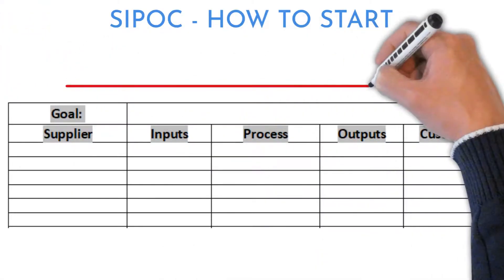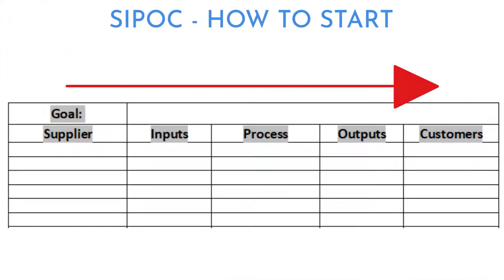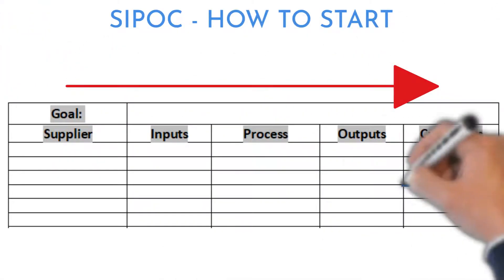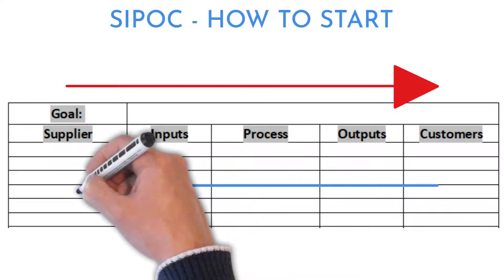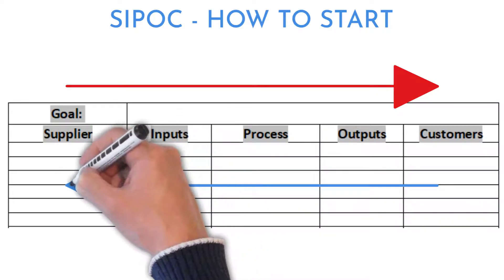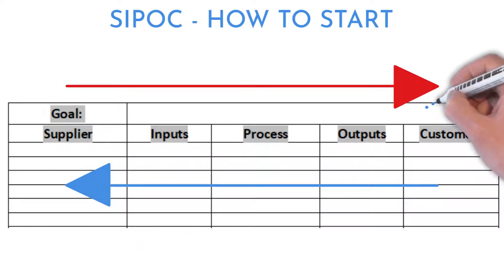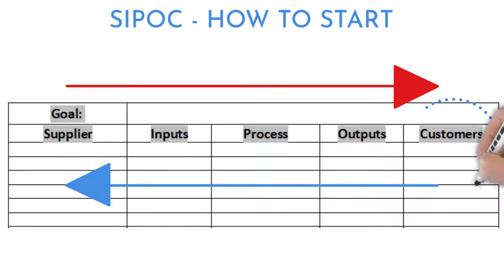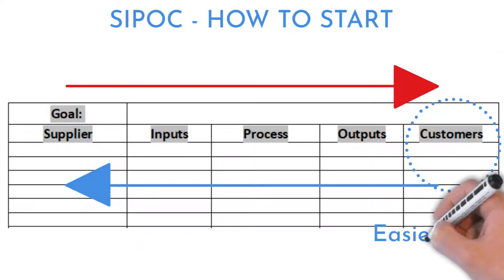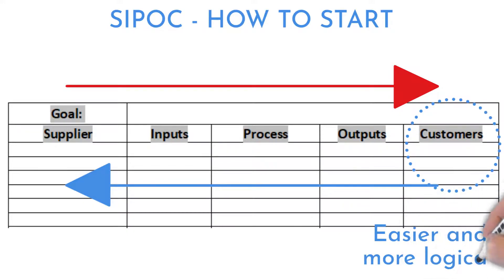Traditionally, somebody starts by identifying the supplier, continues to inputs, and so on to the customers. I suggest going in the opposite direction — start with the customer first, because it is easier to identify them.